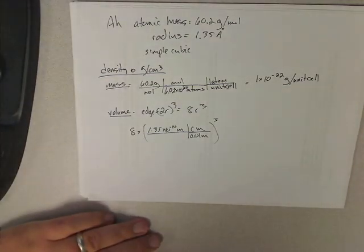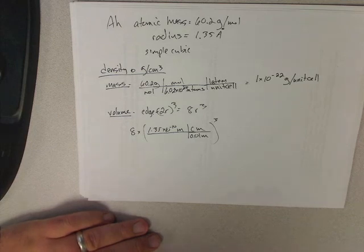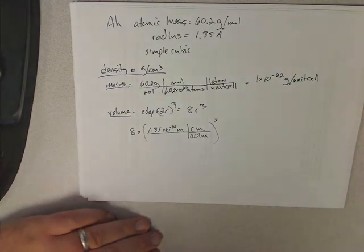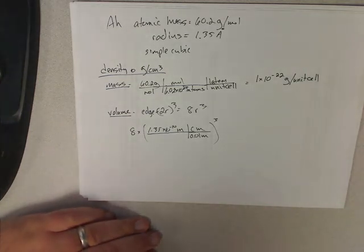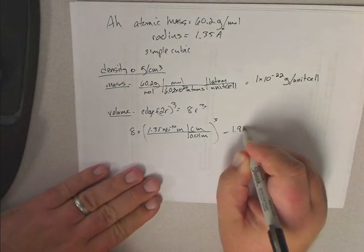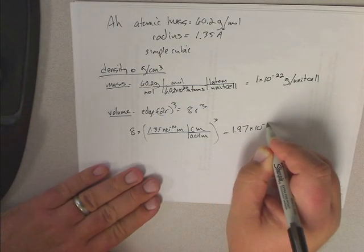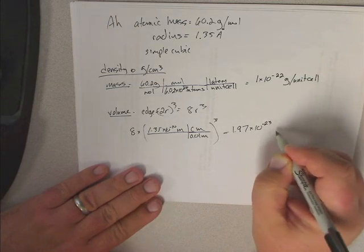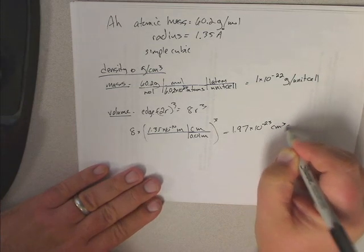And the number that you get if you multiply that is 1.97 times 10 to the minus 23rd centimeters cubed per unit cell.